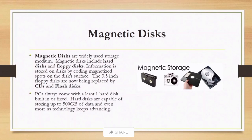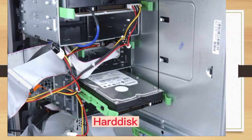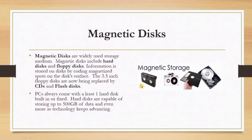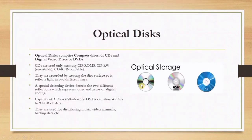We have the 3.5-inch floppy disk. A PC comes with at least one hard disk — that is the built-in or fixed hard disk. Another storage media type is the optical disk, which comprises the compact disc (CD) and digital video disc (DVD).